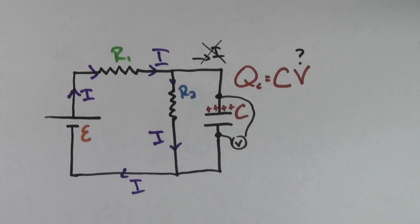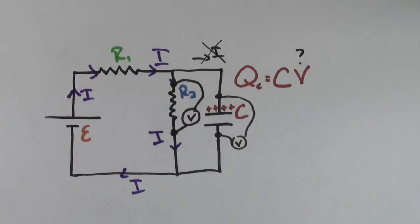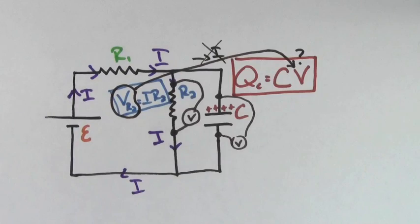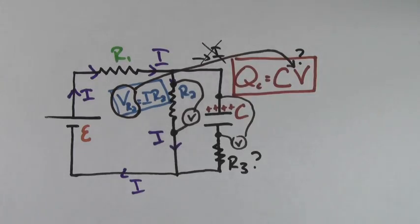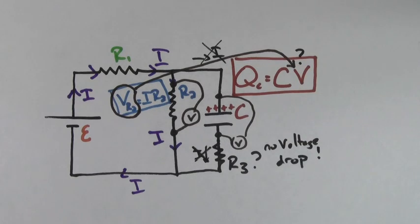To find the voltage drop across the capacitor, just find the voltage drop across the resistor that's in parallel with it using V equals IR. Plugging that voltage into the formula Q equals C times V will give you the charge on the capacitor. If there was an additional resistor in the capacitor leg of the circuit, it wouldn't matter — since there's no current flowing through that leg, there's no voltage drop across that resistor and it's as if it's not even there.